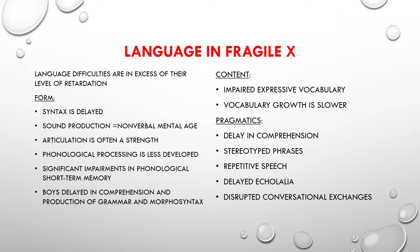They experience stereotyped phrases, repetitive speech, and delayed echolalia. They have disrupted conversational exchanges and problems maintaining coherent and semantically rich conversations. Fragile X Syndrome is associated with poor understanding of other people's minds, problems in working memory, and executive control. Overall comprehension is delayed, similar to those with autism.